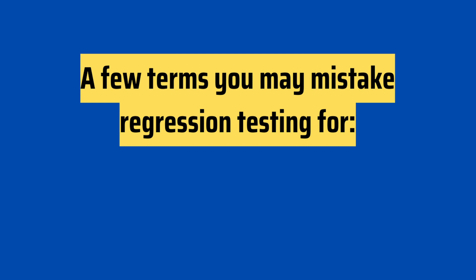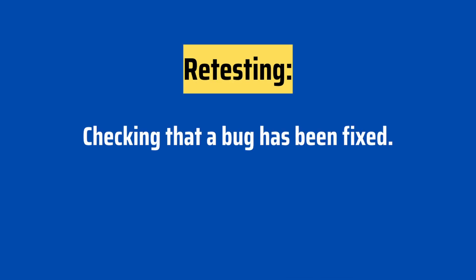It's common for regression testing to be confused with other terms. Let's clarify these distinctions by comparing it with two terms you may mistake it for. First, retesting. Retesting is focused on checking that a bug has actually been fixed. You'd look at the bug in the bug tracking tool, see what exactly the problem is, and when a developer says it's been fixed, you would then verify it's been fixed based on the steps to reproduce — checking that the bug is no longer there. The clear distinction is retesting is focused on a specific bug that has been fixed, while regression testing is checking that the bug fix did not inadvertently affect something else.